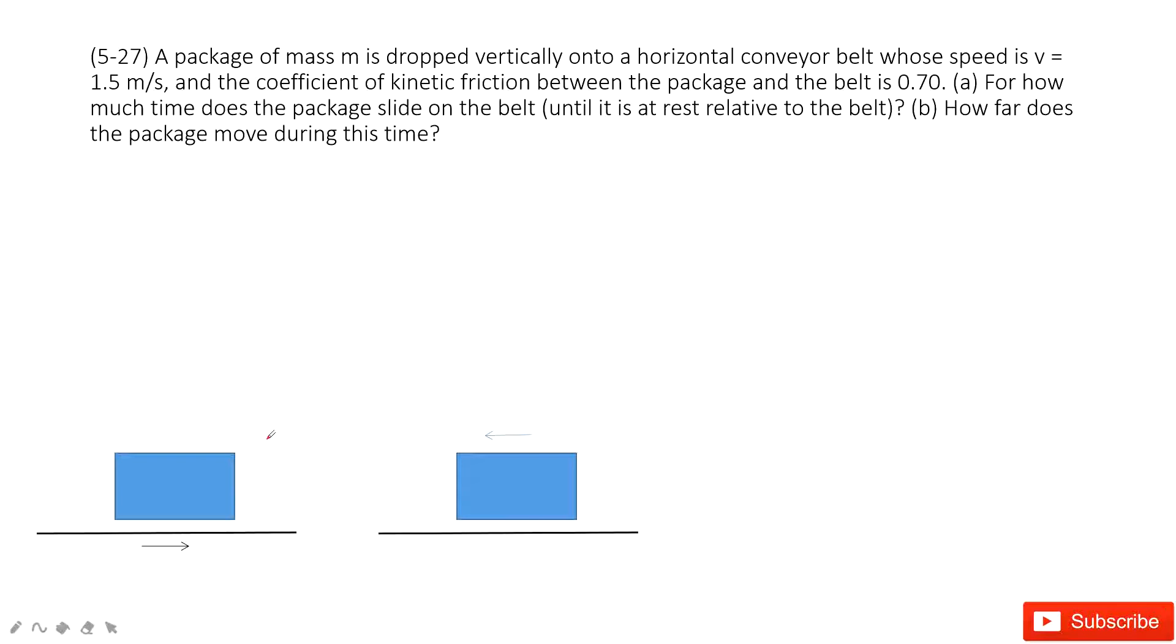They tell us we have a package which is dropped vertically onto this moving belt. And this belt is moving forward, right? So that means initially the package is stationary on the horizontal, but the belt is moving.